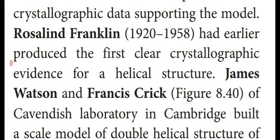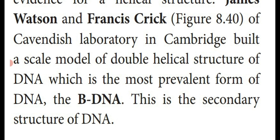Rosalind Franklin provided the helical structure crystallographic evidence. Watson and Crick of Cavendish Laboratory in Cambridge built the scale model of the double helical structure of DNA. It is the most prevalent form of DNA. The form of DNA is B-DNA, which is the secondary structure of DNA. There are two types: the helical structure and B-DNA. This B-DNA is known as the secondary structure of DNA. These are the two scientists, Watson and Crick, who proposed the double helical structure of DNA.